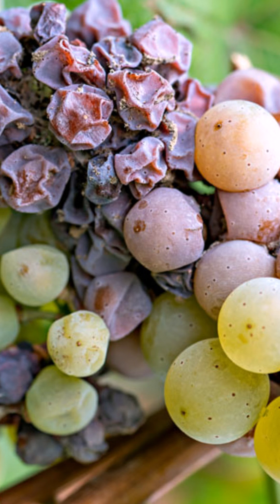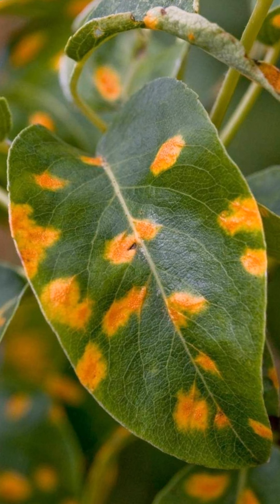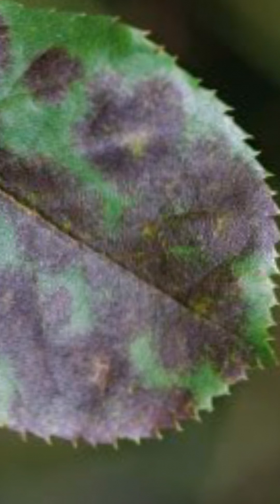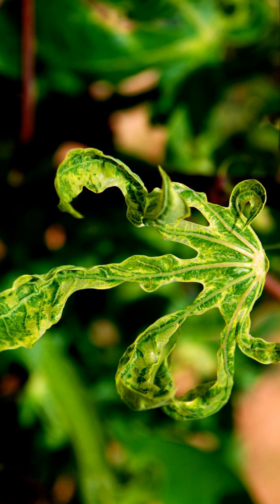Hi everyone, this is Vinita Patakumari. Today I am going to discuss the second important component of our RAVI and AI program, that is plant clinic attachment. In the plant clinic attachment there are mainly four different subjects, among which plant pathology is one of the important subjects, under which we have to prepare a plant disease album.